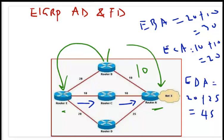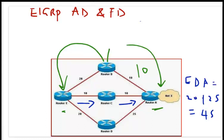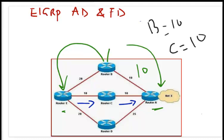How do we determine the feasible successor? This is where we have to look at the role of feasible distance and administrative distance. We have to look from the diagram again: what is the administrative distance of router B, router C, and router D to network X? For B we have 10, for C we have 10 also, and for D we have 25. Now, there is a rule: for a router to be considered a feasible successor, the administrative distance of that router must be less than the feasible distance of the successor.